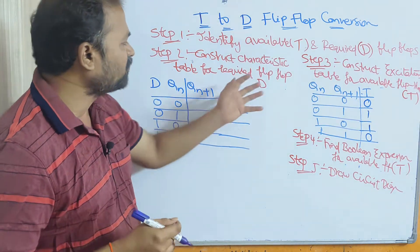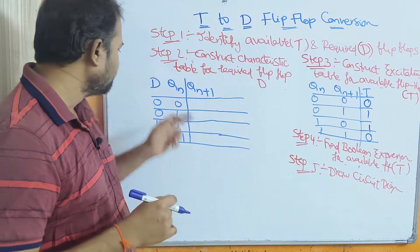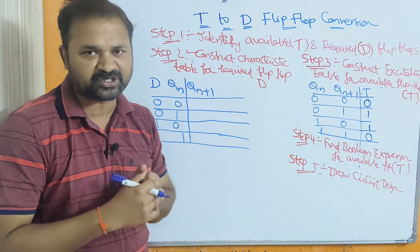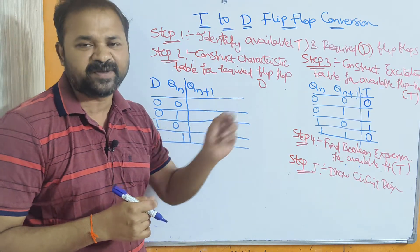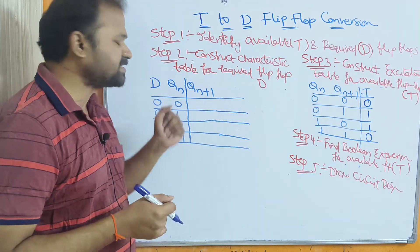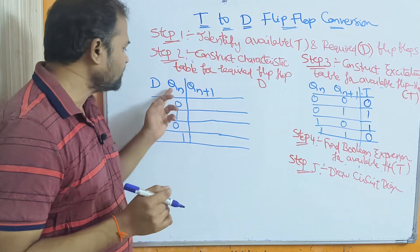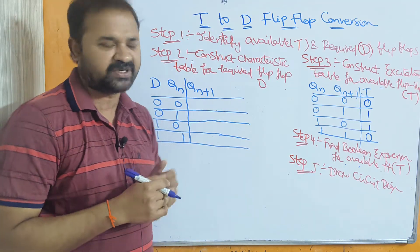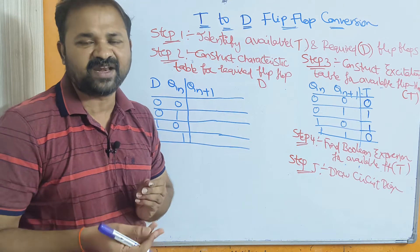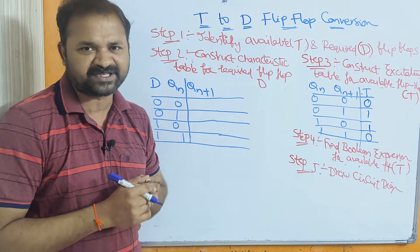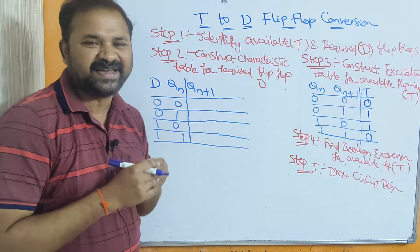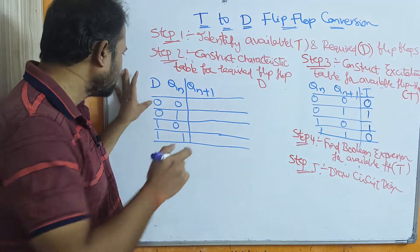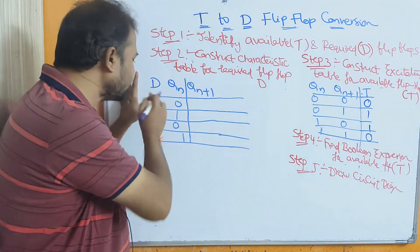Let us see the characteristic table of the D flip-flop. Here the inputs are D and Qn, whereas Qn+1 is the output. Qn+1 means the next state output, whereas Qn means the current state output. So here we are treating Qn as input and Qn+1 as output. We have 2 inputs, so totally we will have 2 power 2, that is 4 combinations. The D flip-flop is useful for storing data, so the next state output is nothing but the D value only.